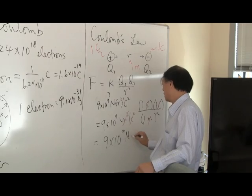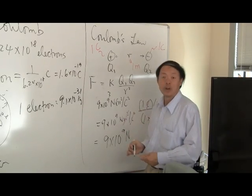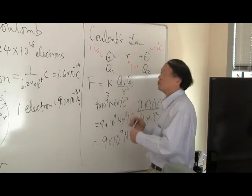that the electrostatic force between the two oppositely charged charges is an attractive force that is given by 9 times 10 to the 9 Newton, a force which is almost 10 billion Newton attractive forces. This is a huge amount of force.